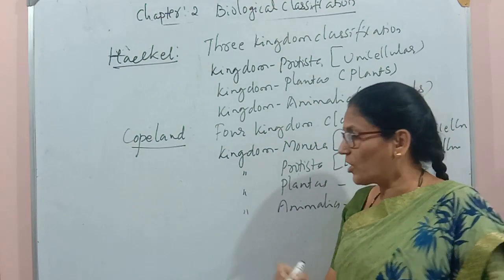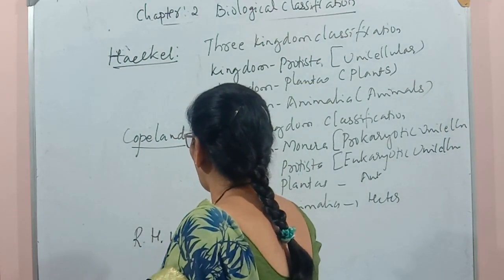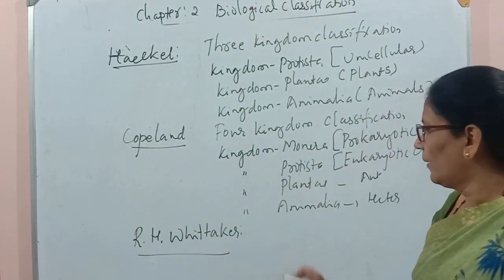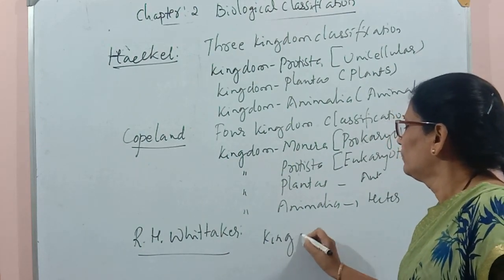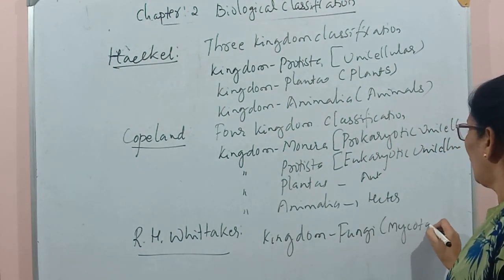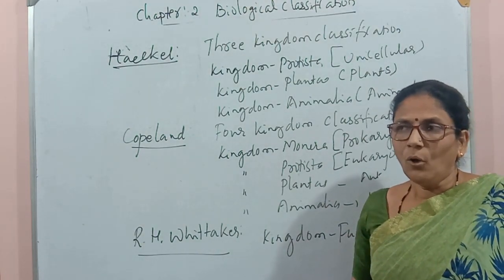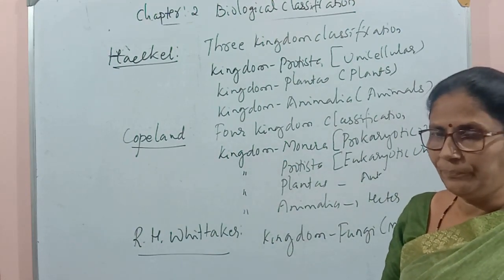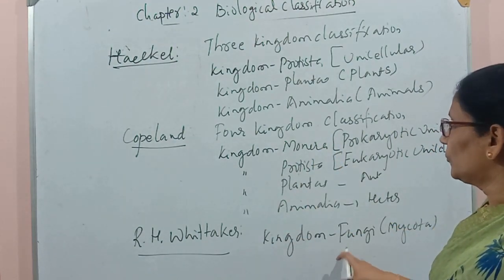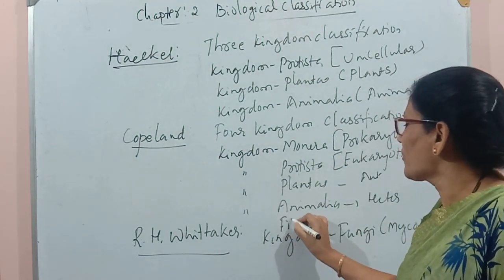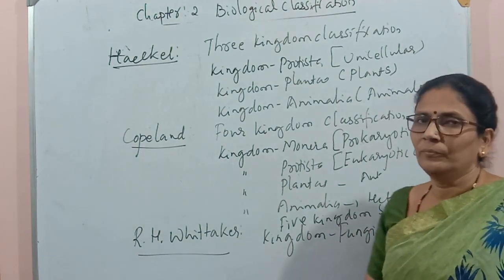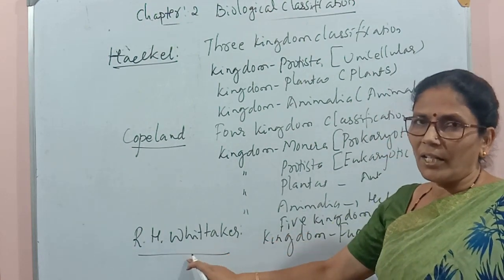Because fungi were not included, another scientist, R.H. Whittaker, introduced a new kingdom called Kingdom Fungi or Mycota, in which all fungi were placed. Along with the four kingdoms and this new kingdom together, we call this the five-kingdom system. This five-kingdom system was discovered by R.H. Whittaker.